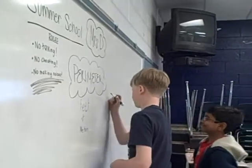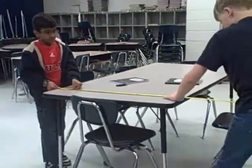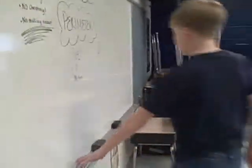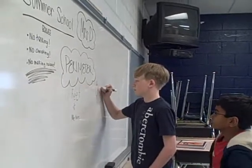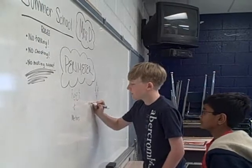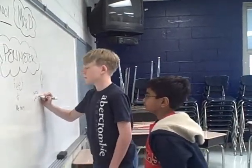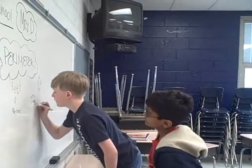The perimeter is the outside of the object. This is the width, this is the length, this is the width, and this is the width and the length. The width is three feet and the length is six feet. So three plus three equals six, six plus six equals twelve, six plus twelve equals eighteen. And that's your answer.